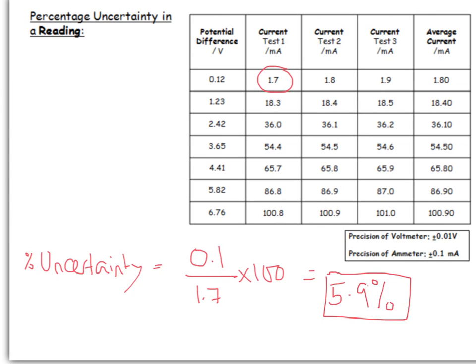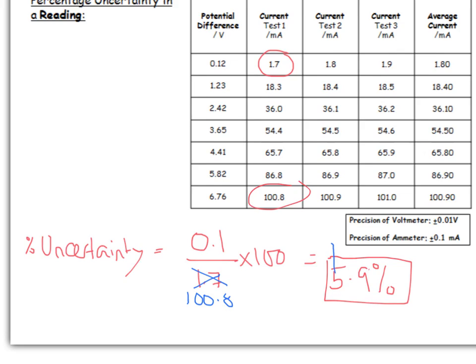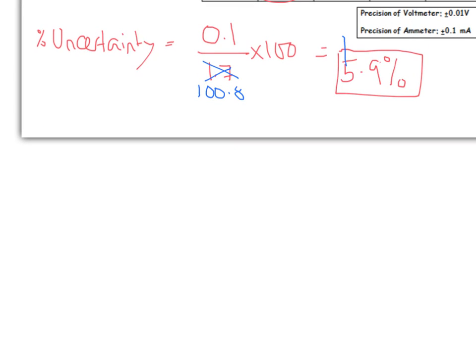One of the things I talked about before was increasing the value. So let's take this one here, the 100.8. This 0.1 is going to stay the same, but instead we're going to replace that with 100.8. If we recalculate that value, it actually comes out as 0.099%. So you can see you've drastically decreased the percentage uncertainty just by taking a larger reading. Very often in these questions, they won't tell you exactly which reading. They'll say calculate the uncertainty in the reading that has the smallest one, so you know to pick the largest value.